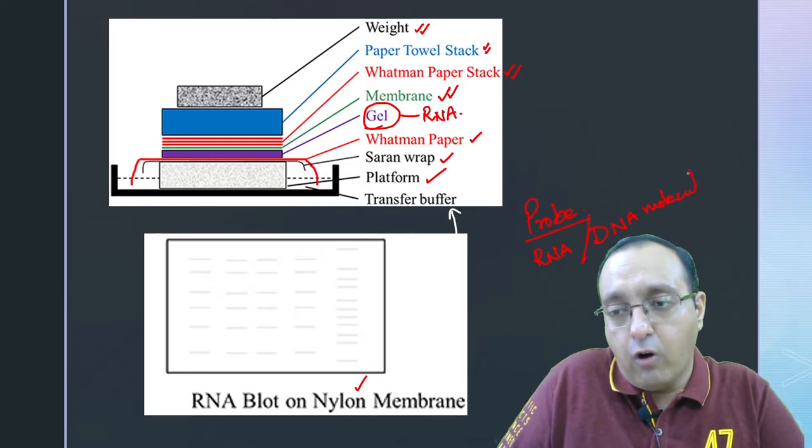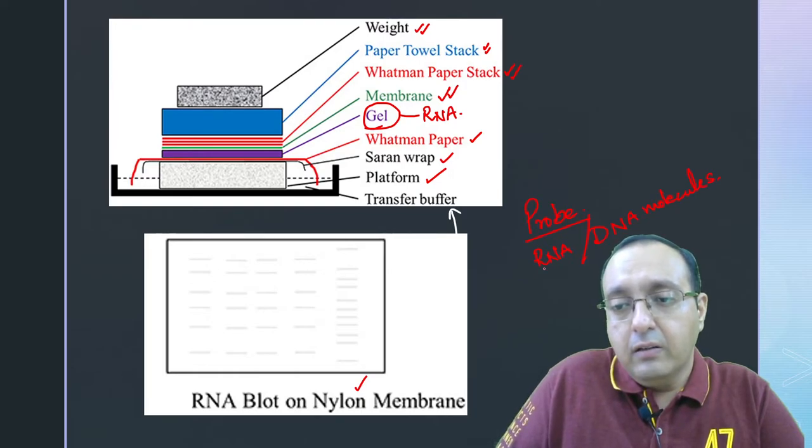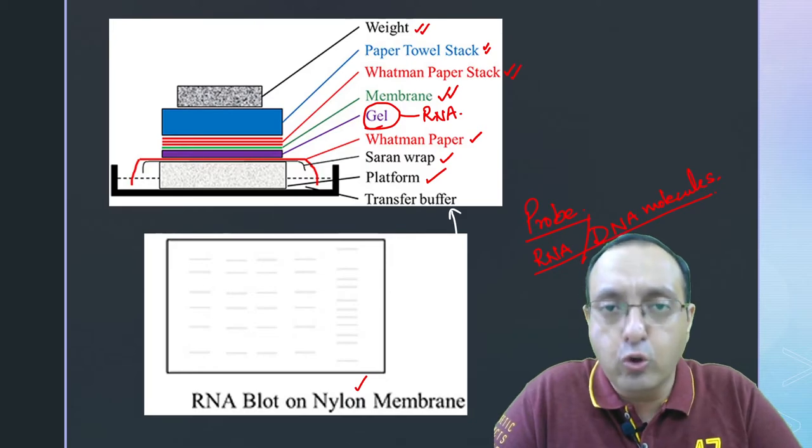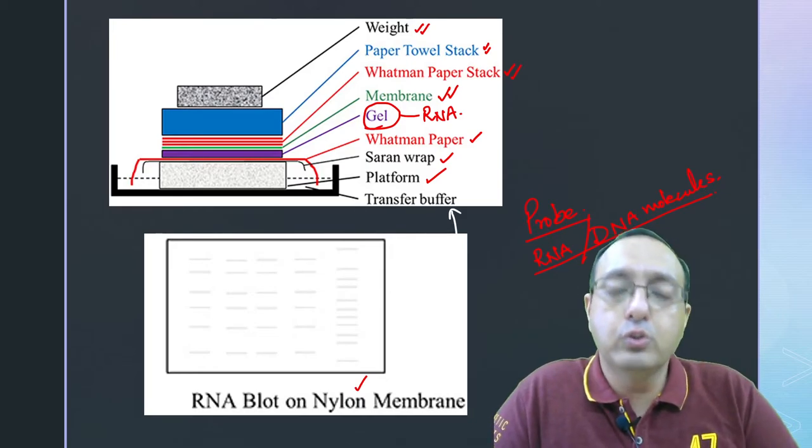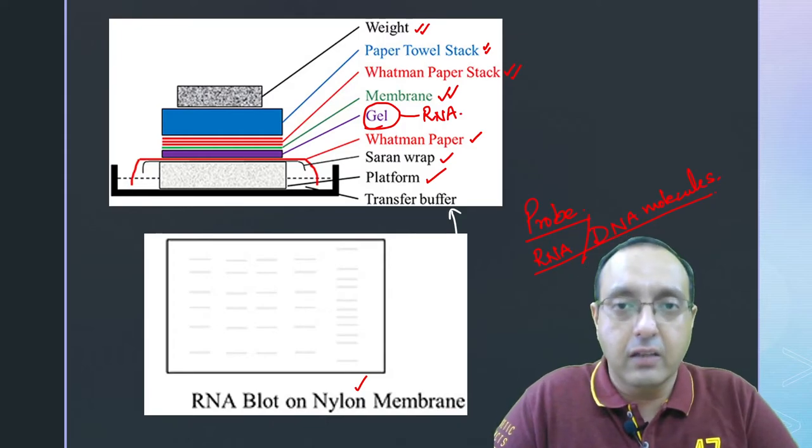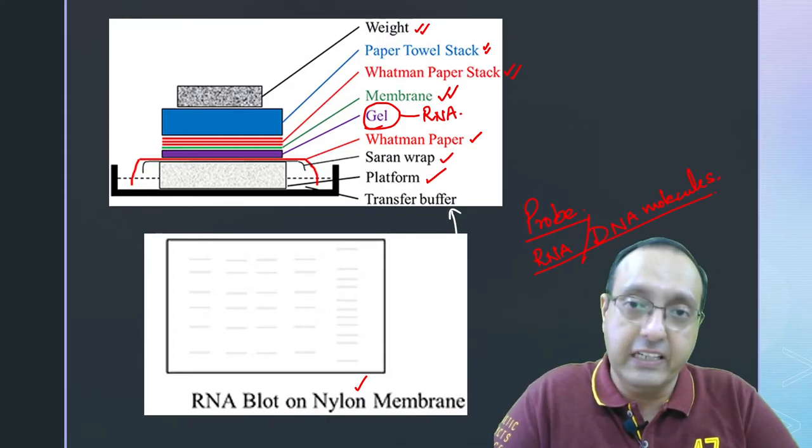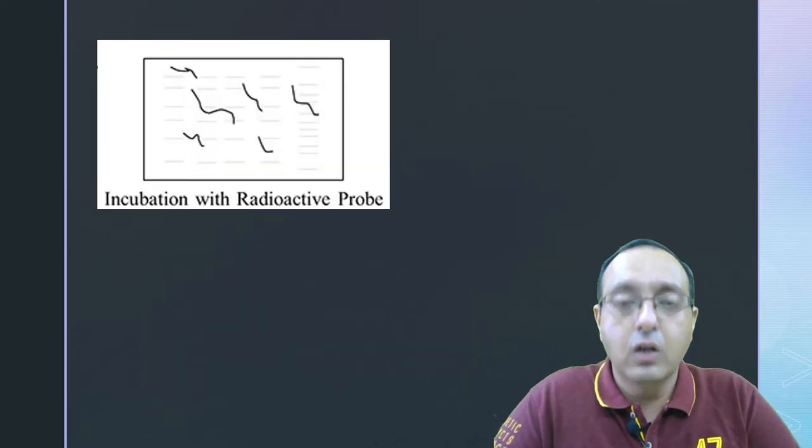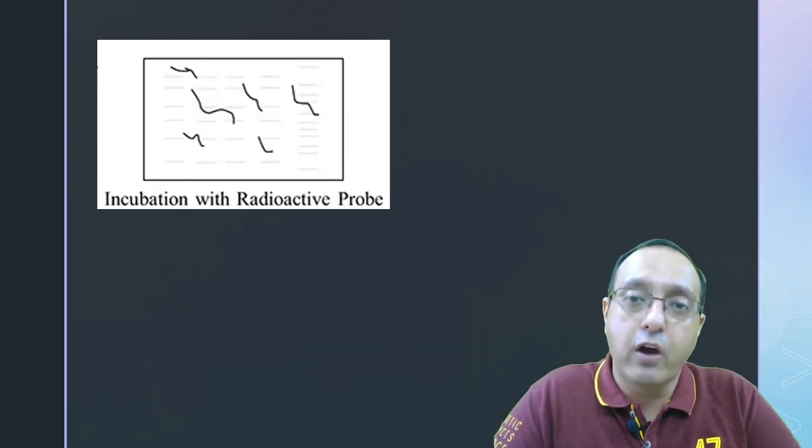As you know, nucleic acids can form complementary base pairing between RNA as well as DNA. Heteroduplexes can also form. We use radio labeled or some other type of label incorporated into RNA and DNA and then we probe the membrane using that.